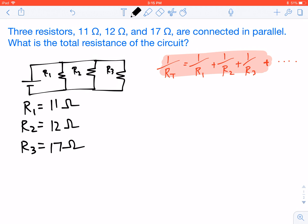Let's start solving using our equation. 1/RT equals 1/11 plus 1/12 plus 1/17.